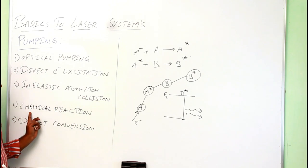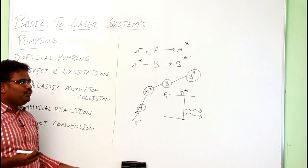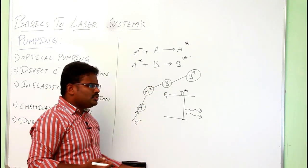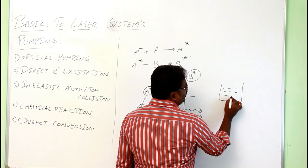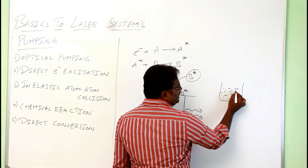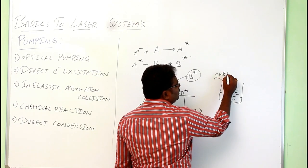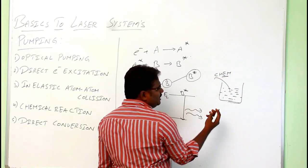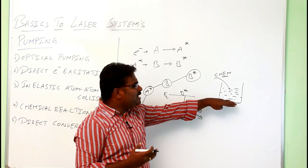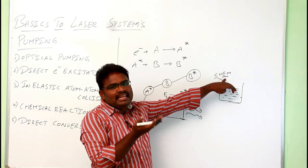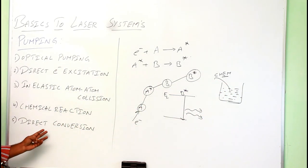The fourth type is chemical reaction pumping. By using certain chemicals, we can excite the atoms. We take an active medium in liquid state and add a chemical to it. The atom goes to the excited state, and while it comes down, we can produce laser light. Since we are exciting the atoms by means of a chemical, this is known as chemical pumping.